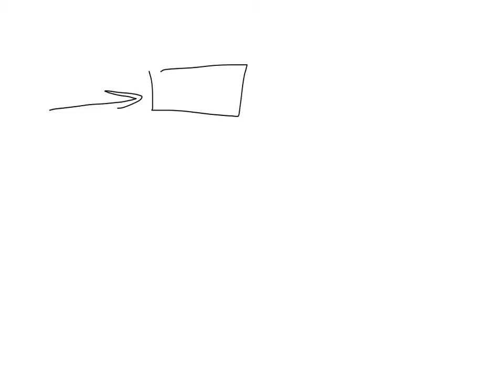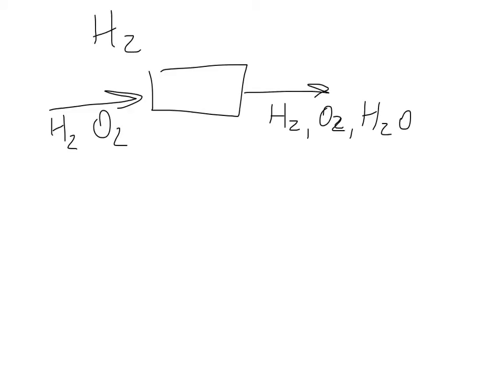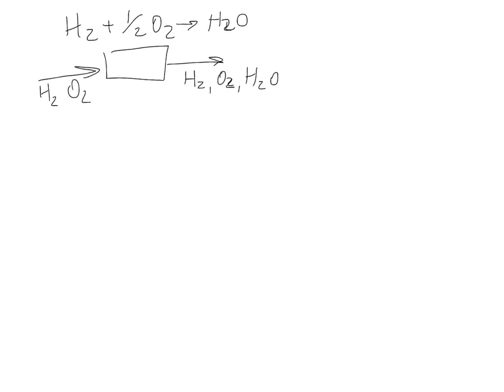Let me start out with a reactor. We have H2O2 coming in, H2O2 and H2O coming out, and we'll have a reaction taking place here. That's our system, and we can solve this. We may be given information about the inputs, we may be given some information about the outputs, and we can use extent of reaction to solve this, but there are other ways.